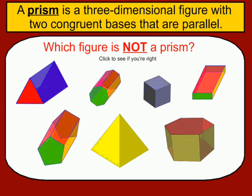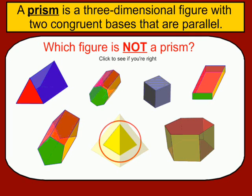So which one of these would not be a prism? Which one doesn't have two congruent bases that are parallel? Well, if you chose the pyramid, you are correct — it is not a prism.